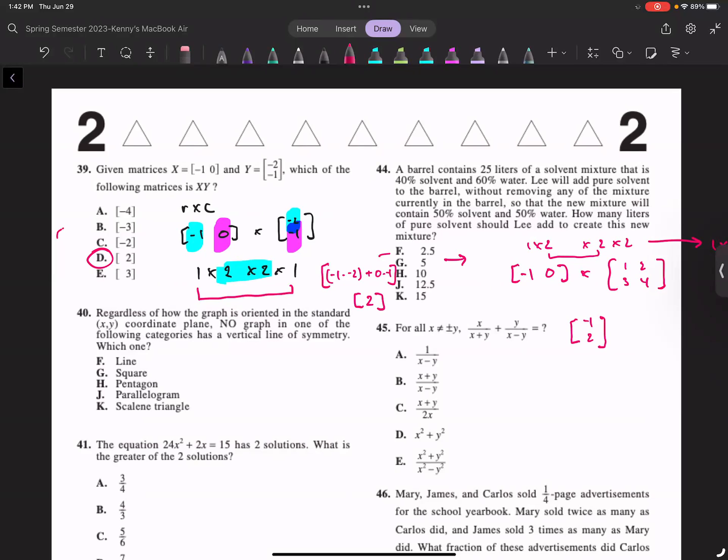Lastly, question 40: Regardless of how the graph is oriented in a standard XY coordinate plane, no graph in one of the following categories has a vertical line of symmetry. Which one? You can just draw these. A line definitely has one. A square - yeah you could probably draw that. A pentagon - you can draw a pentagon. Now you have a parallelogram and scalene triangle. A parallelogram has two sides the same and they're parallel. A scalene triangle has three sides that are different. By that logic, I would go with K. The scalene triangle has three different lengths, so it'd be very hard pressed to have a vertical line of symmetry compared to a parallelogram.